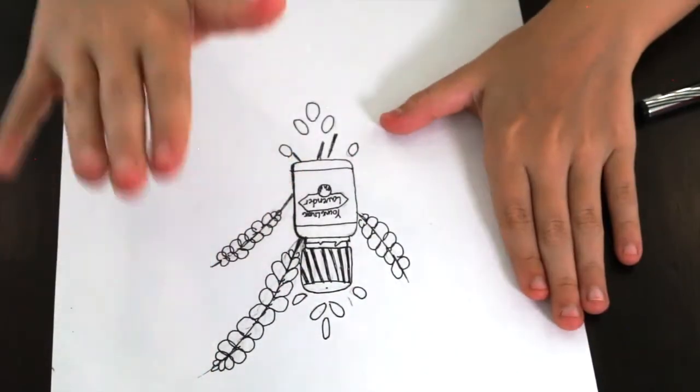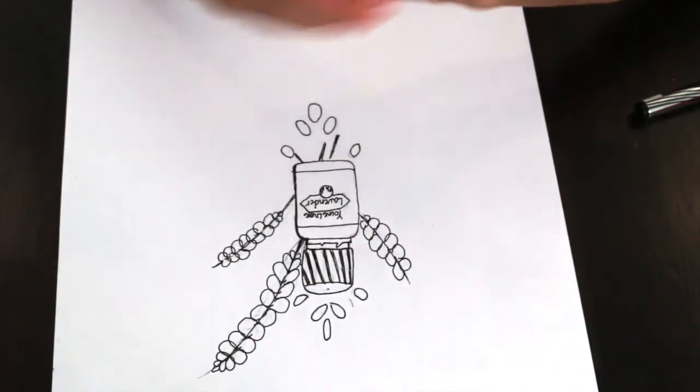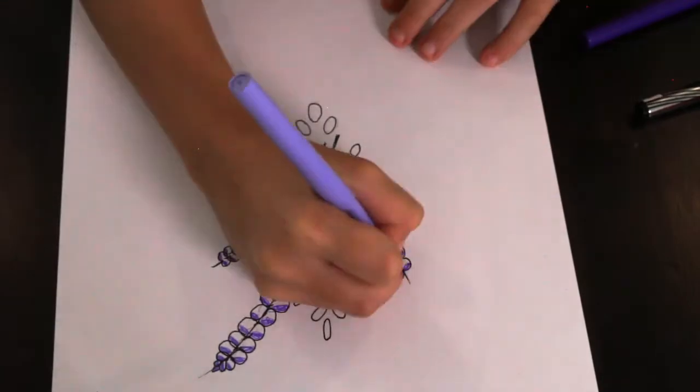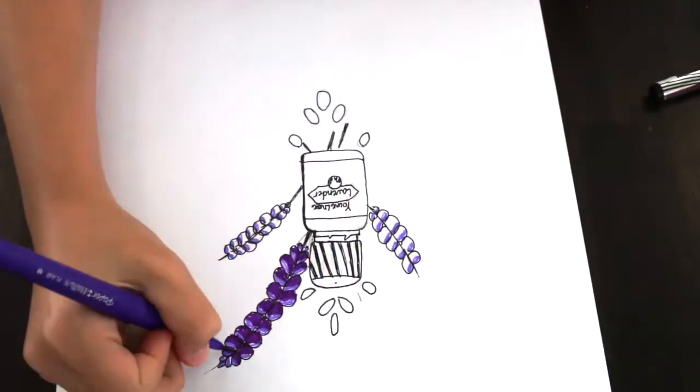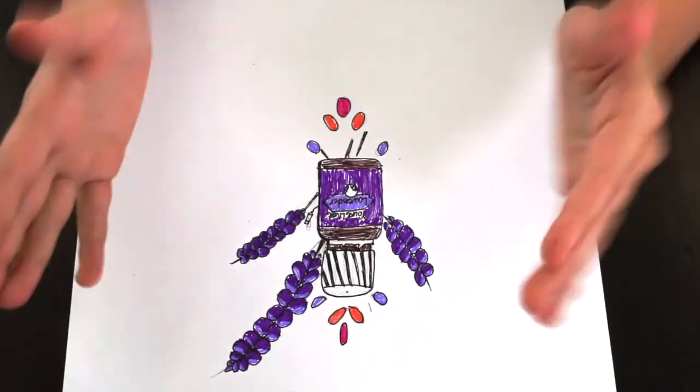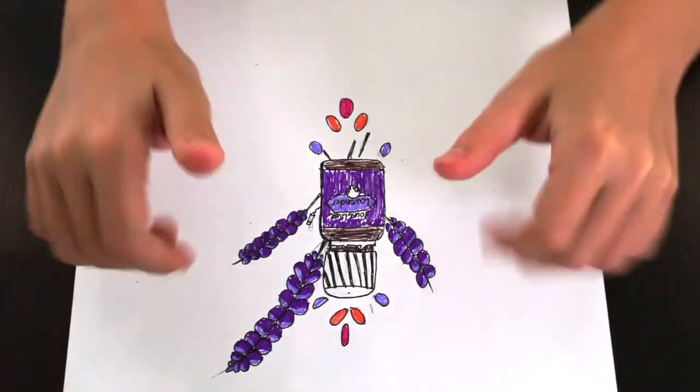Now if you weren't coloring this, this would be done for you. But if you are coloring it, then go ahead and color it how you want. That's all you had to do. I hope you had a great time drawing your oil bottle.